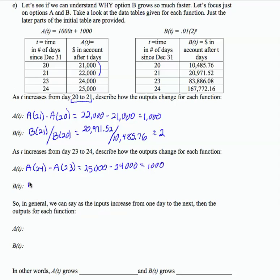For B, B of 24 divided by B of 23. That's going to give 167,772.67 divided by 83,886.08, which is again approximately equal to 2.